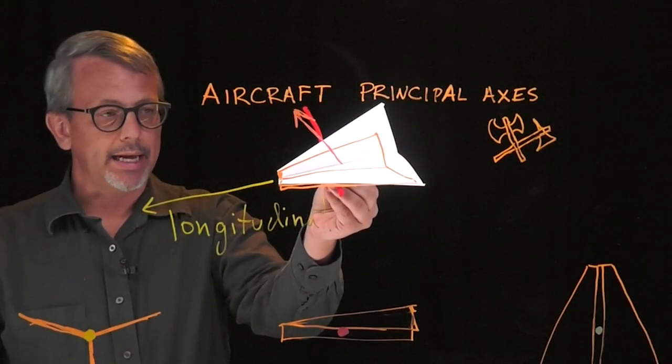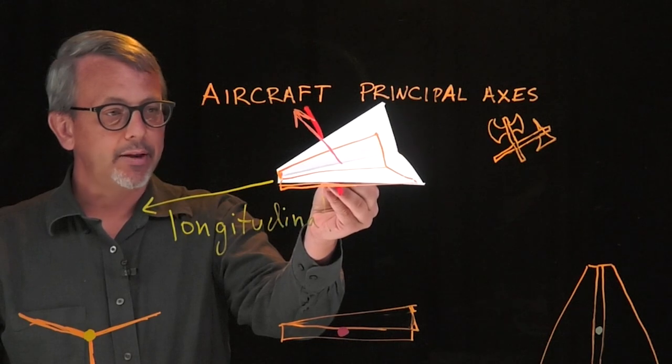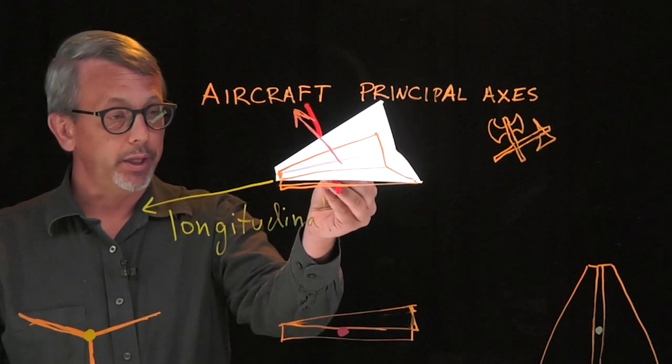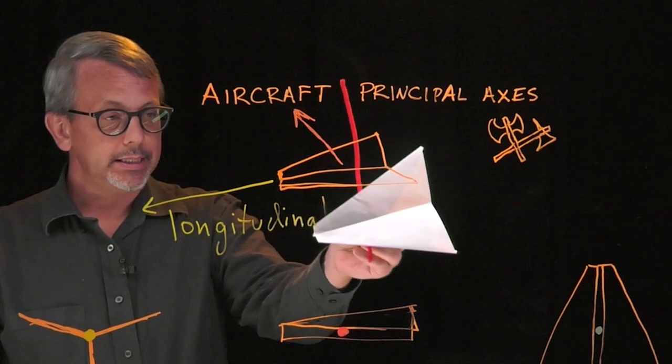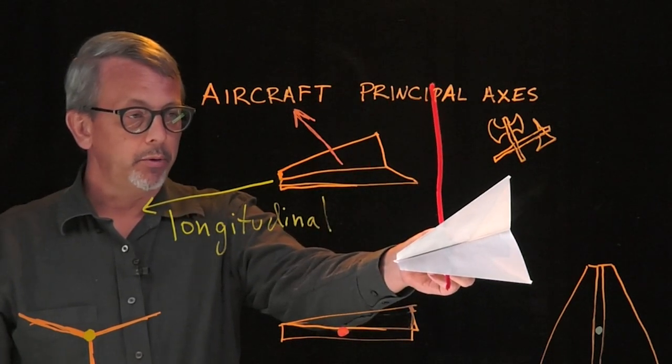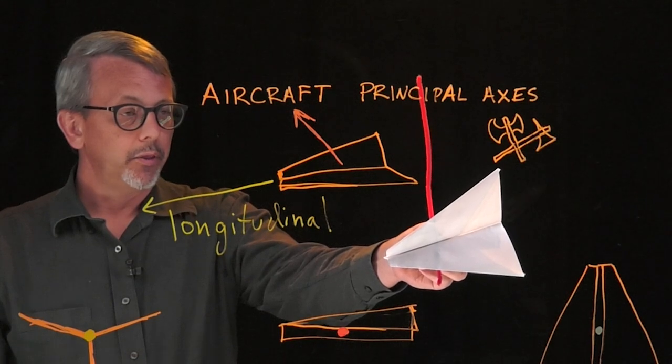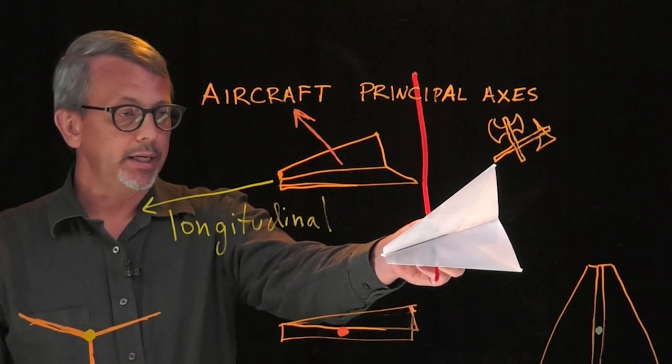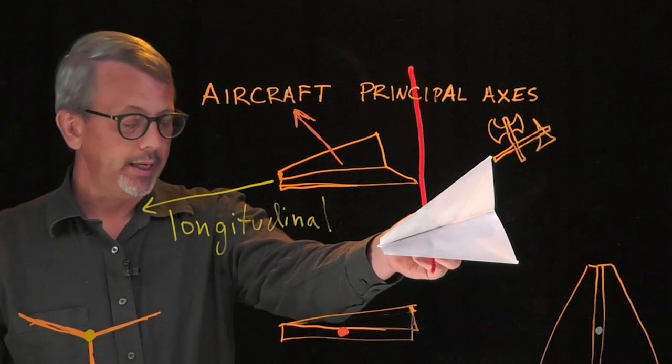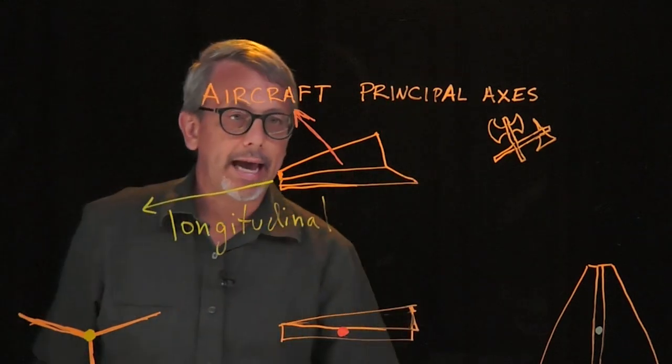The second principal axis runs out the side of the plane, out the right side of the plane, as you're looking at it from the top. This axis you might be able to remember if you can recall from American football, the lateral pass which goes sideways. It runs out the side of the plane and it is called the lateral axis.